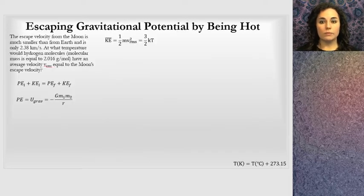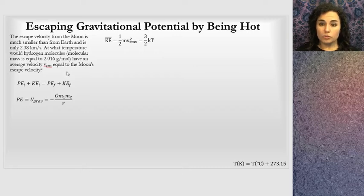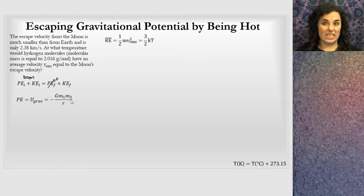The problem I picked out, 'Escaping Gravitational Potential by Being Hot,' is an example of relating temperature to velocity of a molecule. The escape velocity from the moon is much smaller than from Earth and is only 2.38 kilometers per second. How would you find that? This is an application of energy. There's some potential energy on the surface of the moon given by gravitational potential energy—we can use the universal gravitational equation. There's kinetic energy the molecule has. When it escapes the gravity of the moon, there will be zero potential energy. It's escaped, so this term is zero, and it can sit there without being attracted back.